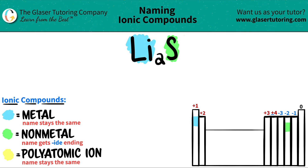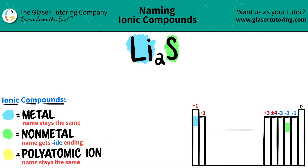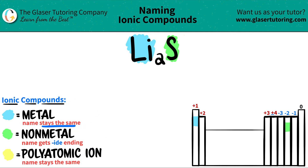So now all we have to do is use our rules to get the name. The metal name always stays exactly the same. So this was lithium, so I'm just going to write down lithium.